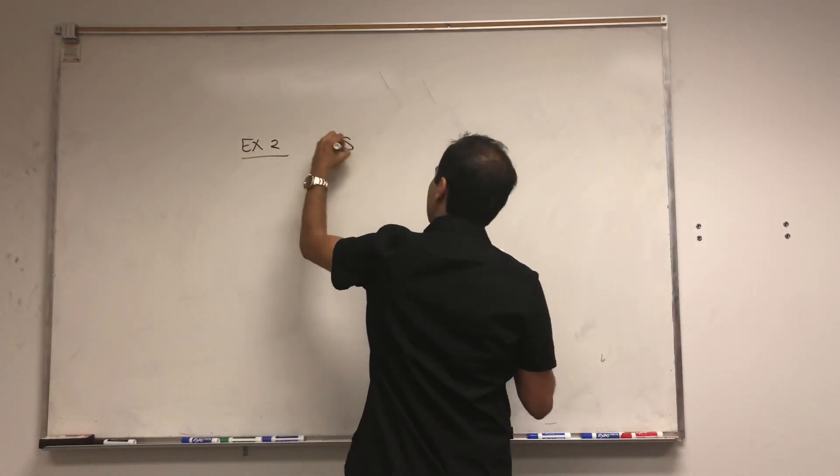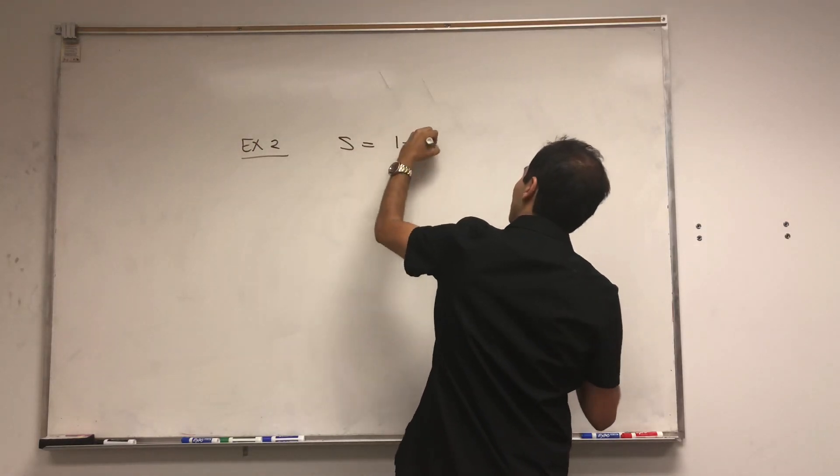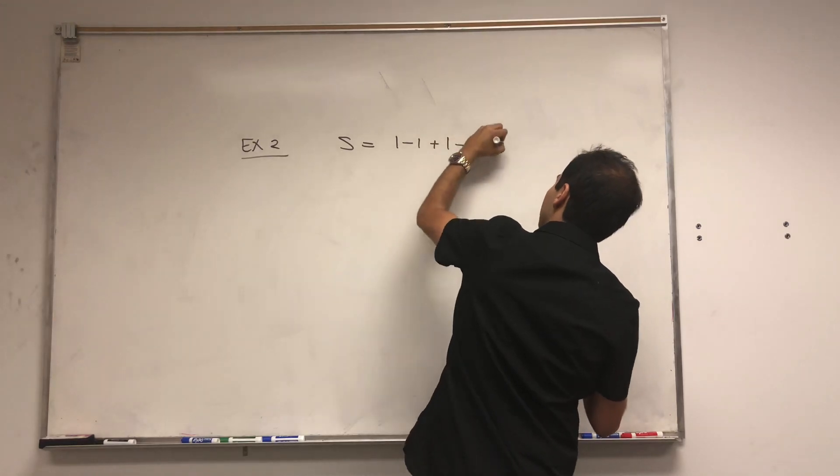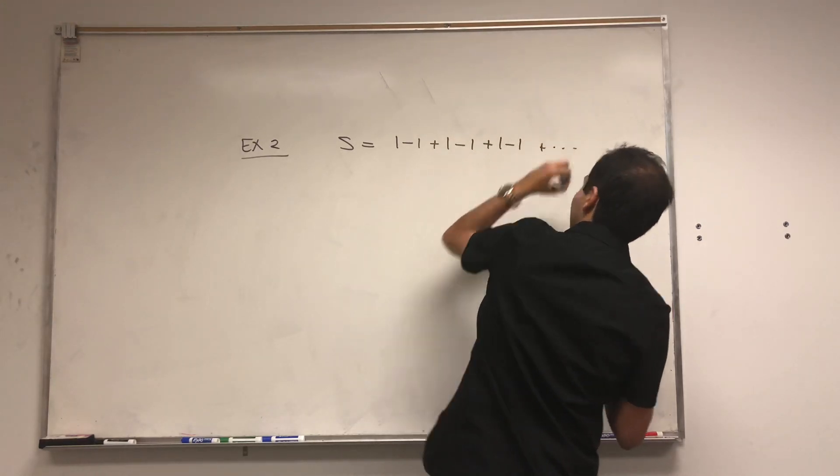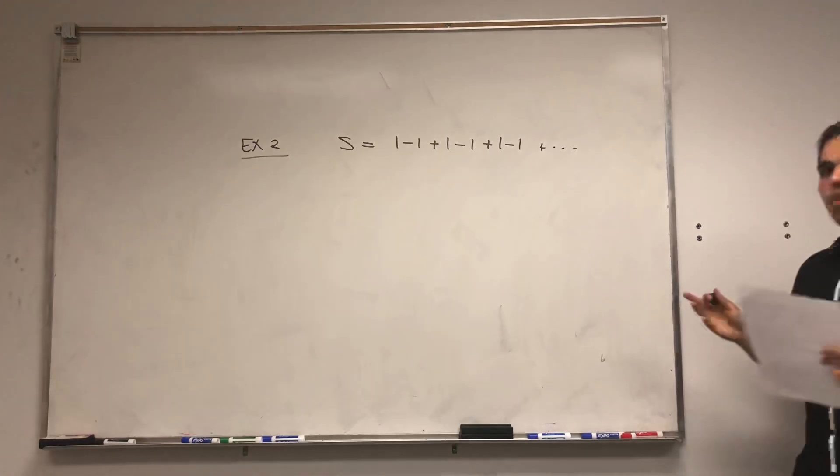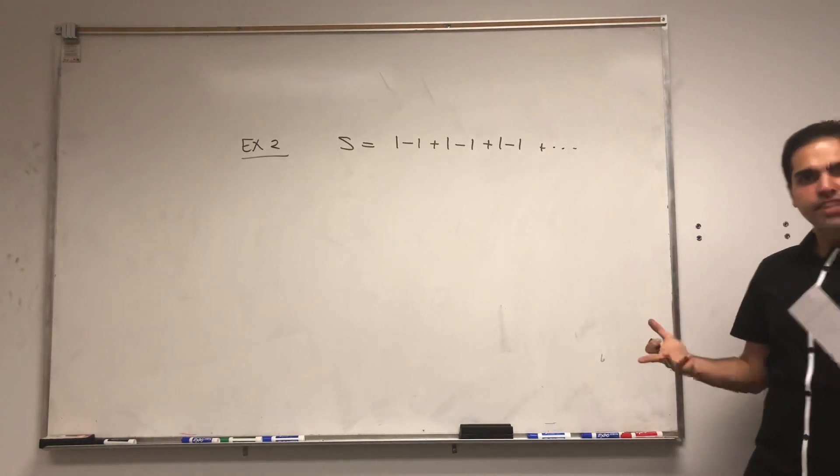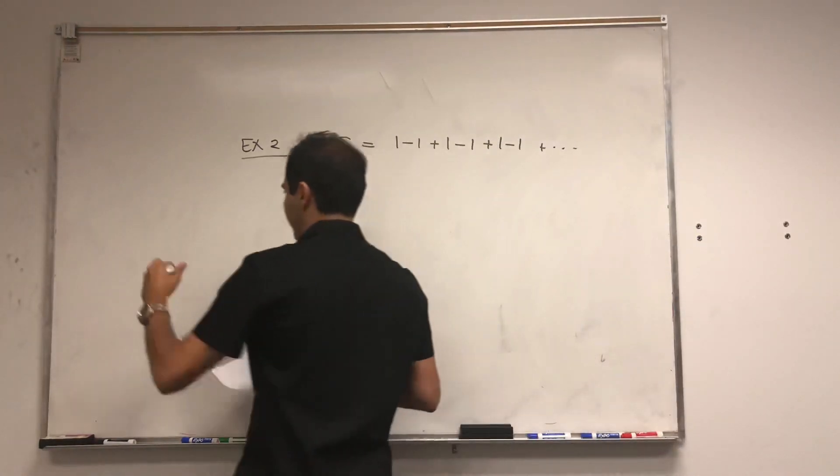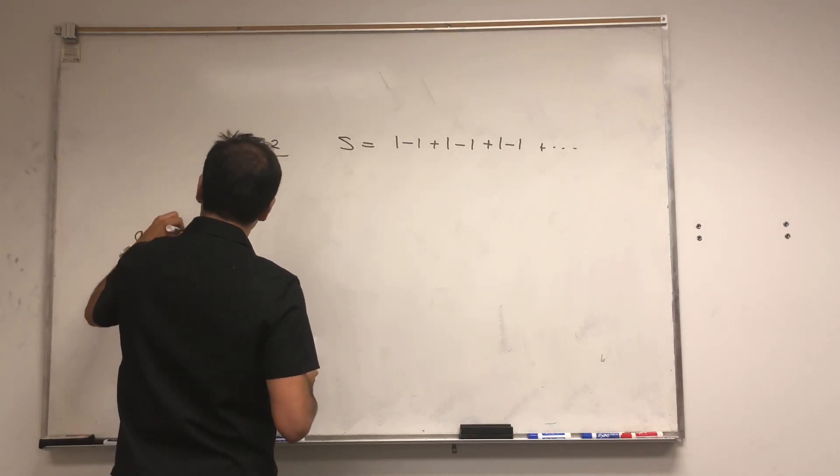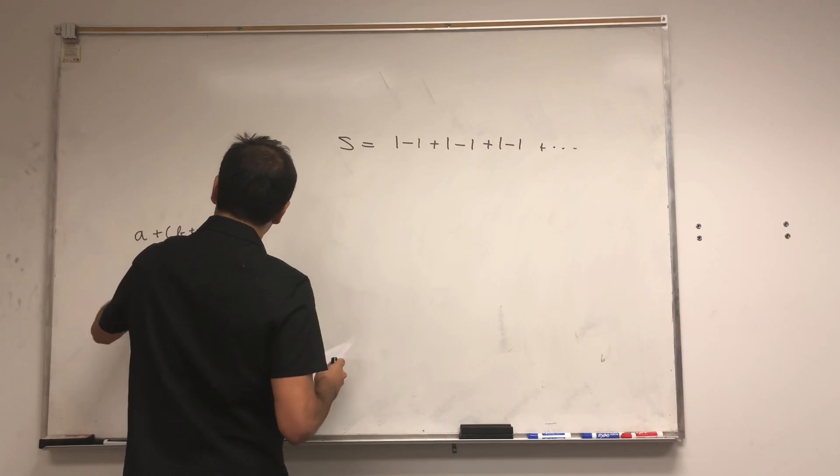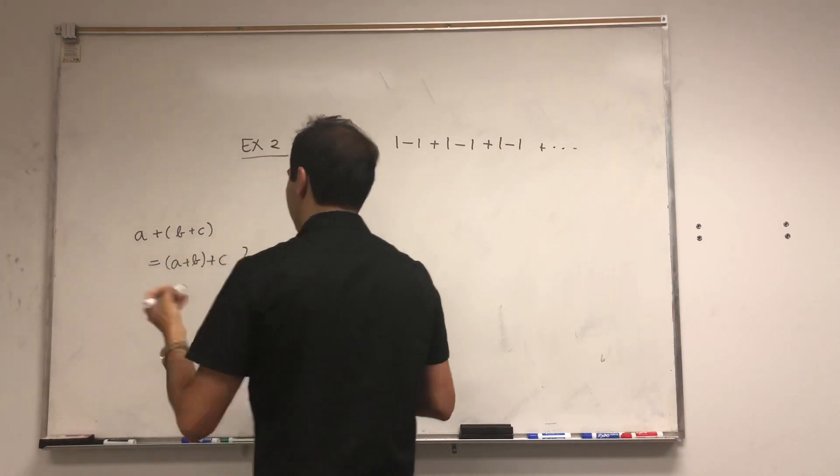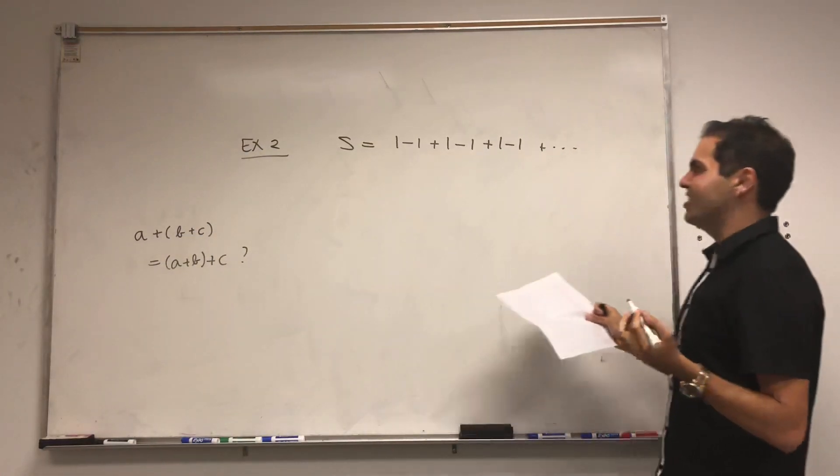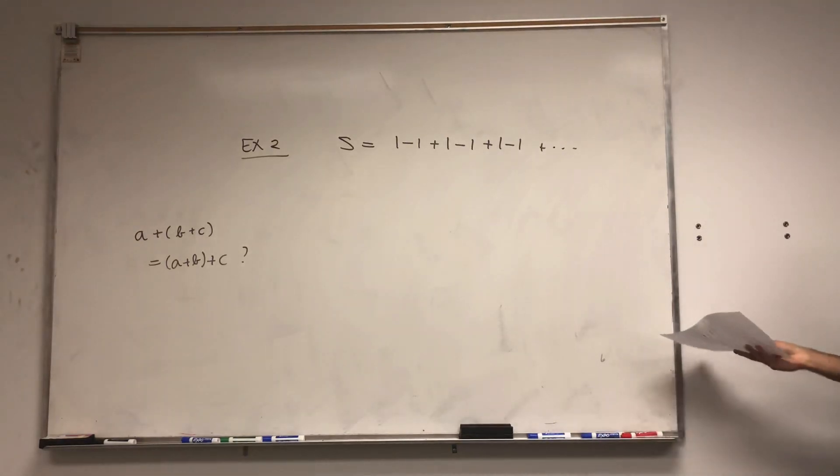Well, what about this easier series? S is just 1 minus 1 plus 1 minus 1 plus 1 minus 1, etc. And the question is, is it still true for infinite series that we have a plus b plus c equals to a plus b, c plus c. That is addition associative here. And I want to show you that now.